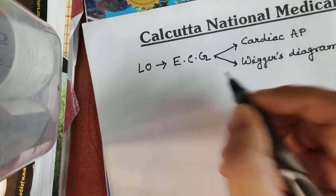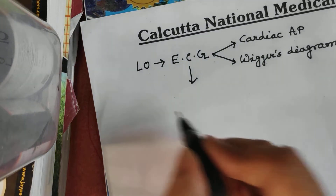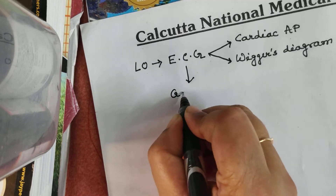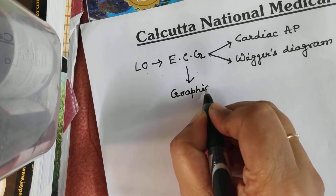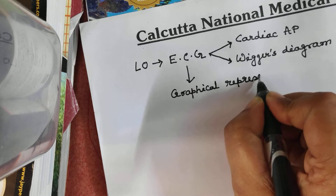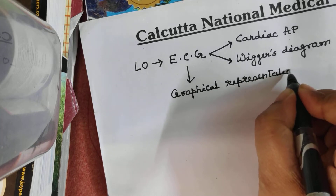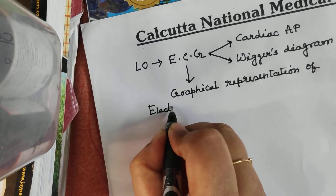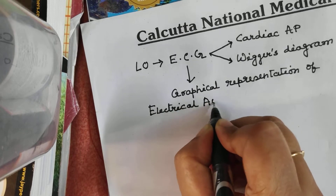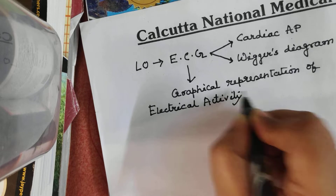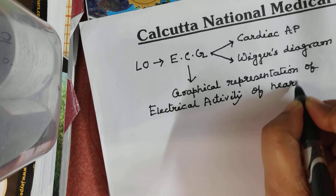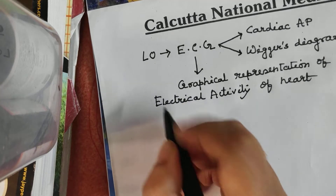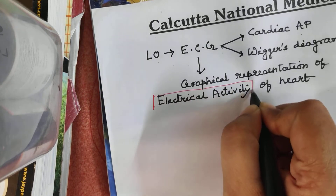First, what is ECG? ECG is electrocardiogram. We can say that it is the graphical representation of the electrical activity of the heart.